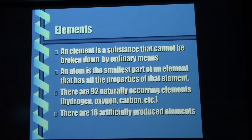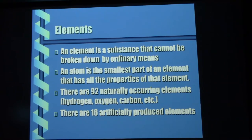An atom is the smallest part of an element that still has all the properties of that element. So an iron atom is still going to be affected by a magnetic field — it's got the same properties as a chunk of iron. There are 92 naturally occurring elements and 16 artificially produced elements. In other words, if we have access to the right kind of equipment in a laboratory, we can make our own elements.